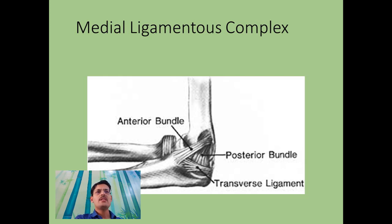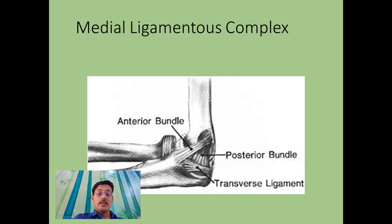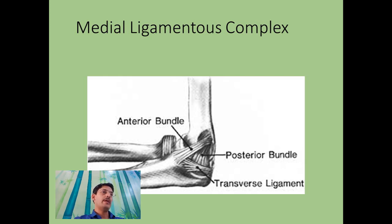It is very rare to have injuries to the medial ligamentous complex, but occasionally you may get ulnar collateral ligament avulsions and UCL injuries. These injuries are very common in throwing athletes, specifically baseball players — particularly pitchers who develop this kind of lesion.